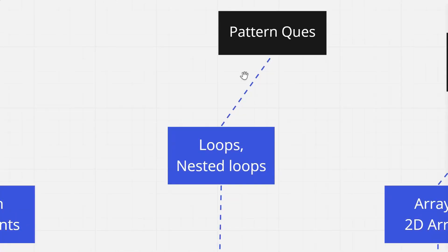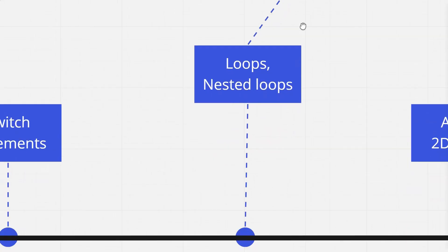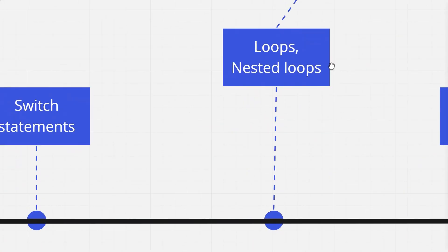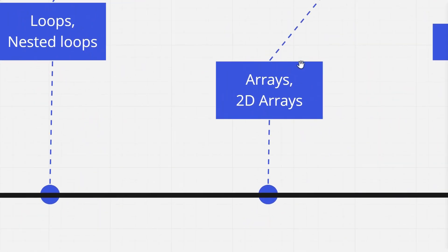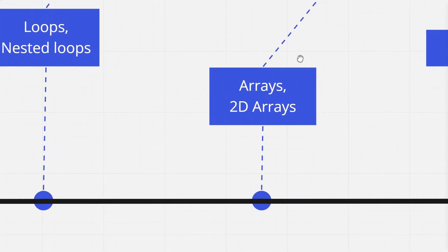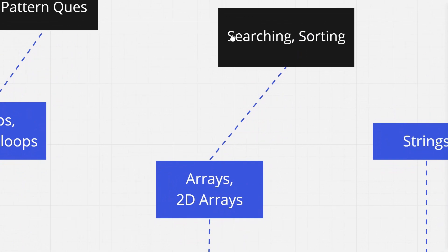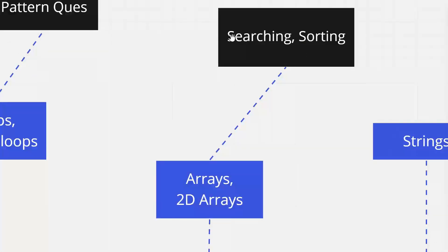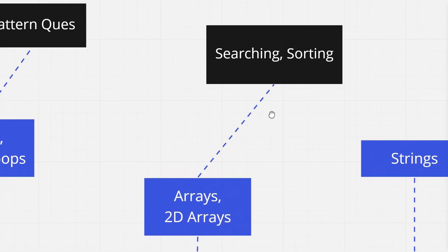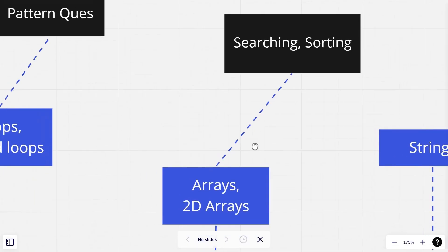After that we will learn about loops and nested loops. We will also be doing pattern questions here, because after doing these questions your logic building skills will definitely improve. Once you are comfortable with loops, we are going to learn about arrays and 2D arrays. In arrays we will learn about linear search, binary search, basics of sorting, and we are also going to learn and practice problems on the two pointer algorithm.